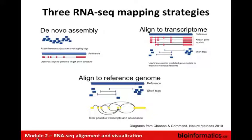Another strategy is to align directly to the transcriptome. Instead of aligning to the genome and inferring transcripts, you align directly to transcript sequences — a much smaller search space, since only about one to two percent of all human bases correspond to the transcriptome. The disadvantage is that it relies on what you already know about the transcriptome, biasing results toward known transcripts. You may miss novel isoforms, novel fusions, or novel genes entirely.